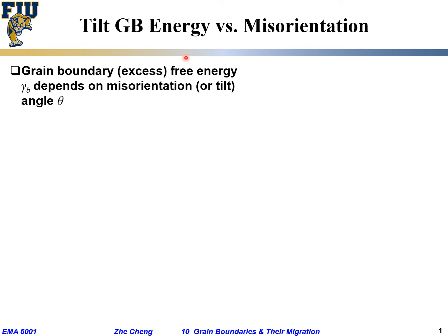After discussing the simplest type of low angle grain boundaries, let's consider the energy aspect of grain boundary versus misorientation. We say a grain boundary has excess free energy, gamma_b, compared to when the crystal is perfect with no grain boundary. This excess free energy gamma_b depends on misorientation or tilt angle theta.